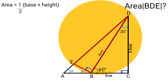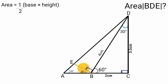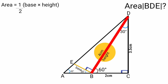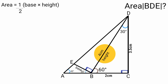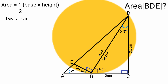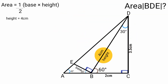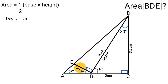This means triangle BDE is a right-angle triangle. In a right-angle triangle, any two sides perpendicular to each other can serve as the base and height. So line BD can be the base and the other perpendicular side is the height. Since this side is 4 centimeters, the height is 4 centimeters. To find the base, we need the angles of triangle BDE.